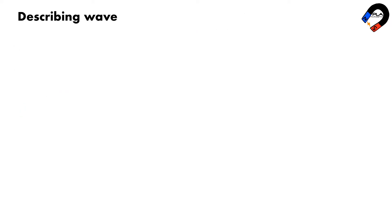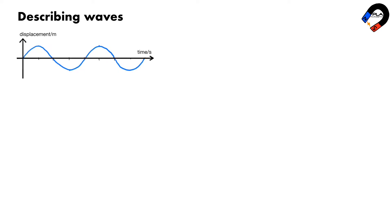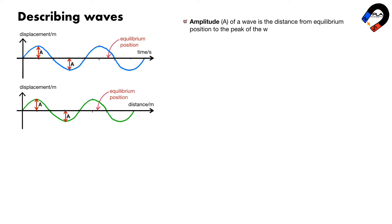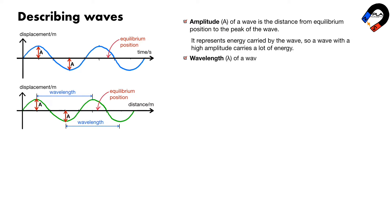Describing waves: here is the displacement-time graph and displacement-distance graph of a traveling wave. The amplitude A of a wave is the distance from the equilibrium position to the peak of the wave. It represents energy carried by the wave, so a wave with a high amplitude carries a lot of energy. The wavelength lambda of a wave is the distance between consecutive peaks or between consecutive identical points.